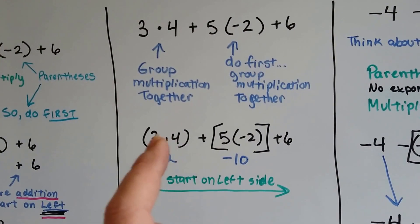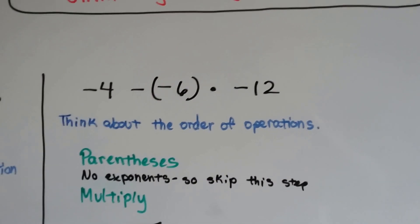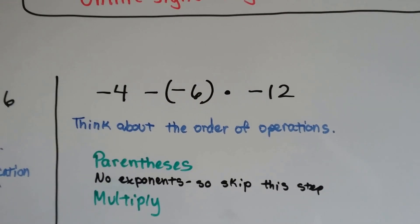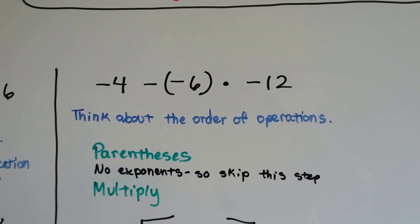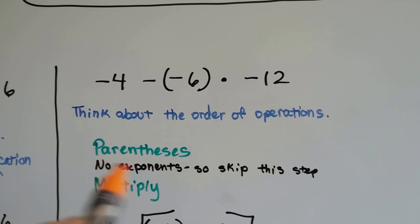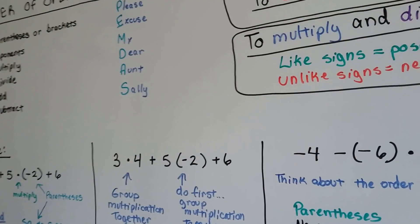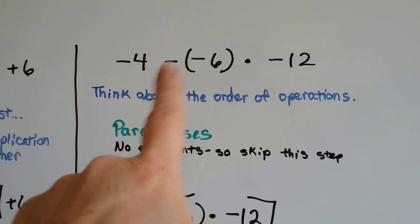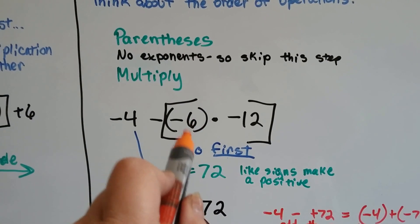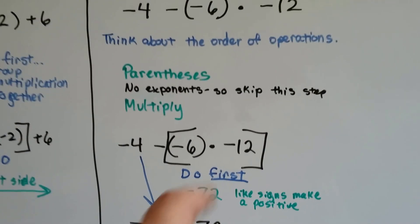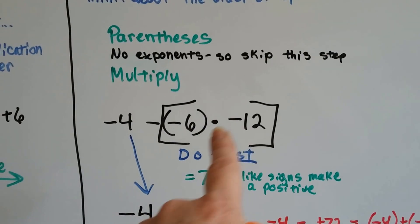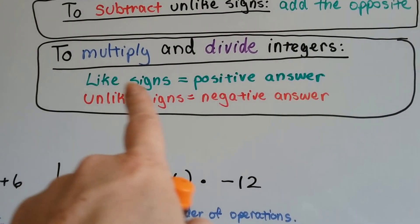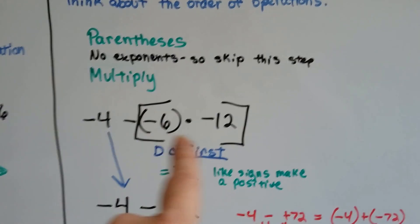We start on the left and go across once we've grouped and answered the multiplication. Now look at this problem. There's a parentheses here — is it showing an operation or just keeping the negative 6 away from the negative sign? There are parentheses but no exponents, so we skip that step. Next is multiply: there's no multiplication here, but there is multiplication here — negative 6 times negative 12. We get positive 72 because they have like signs: negative times negative makes positive.